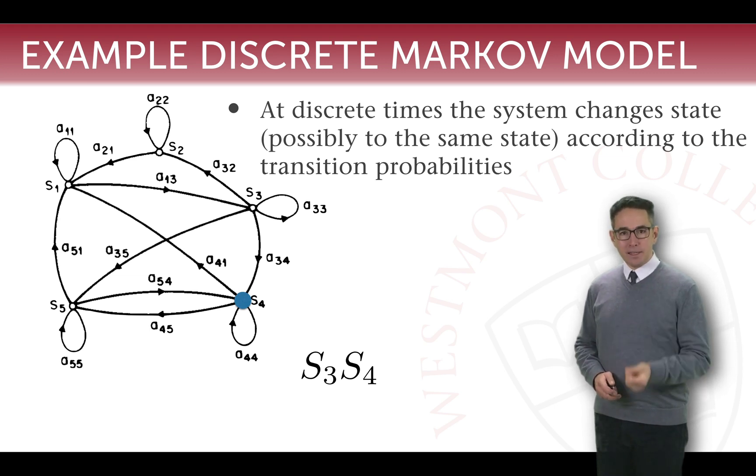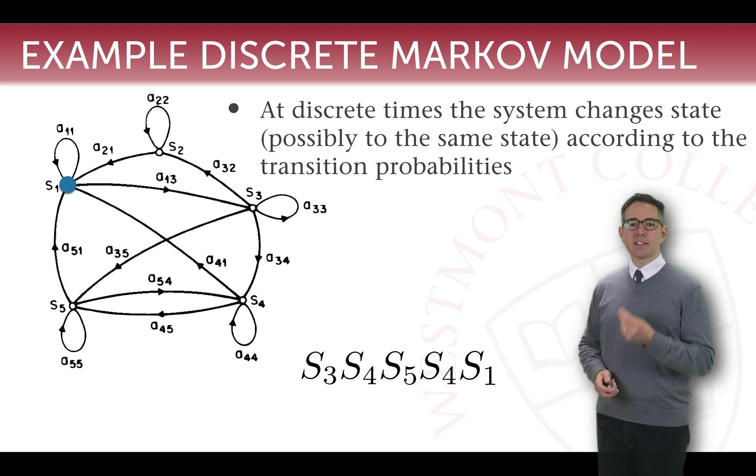On our third beat, we make a transition that's possible but probabilistically determined to S5. On the next beat, we make a choice. Well, we don't make a choice. The system randomly decides to move to S4. The next beat, the system randomly models a choice to S1. Now that we're in S1, we have two choices of where to go next. We can either stay in S1 or we can move to S3. And so on the final beat of this example, we end up staying in S1.